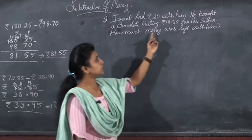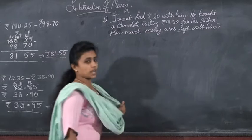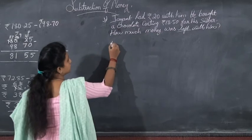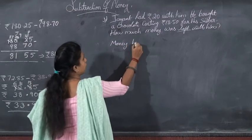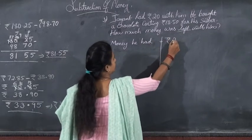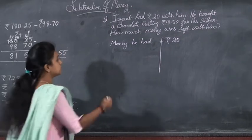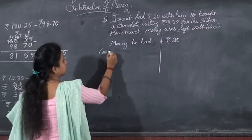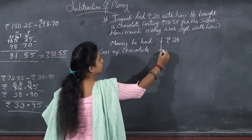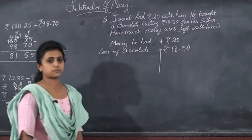Left. Now let's write the statement. Jaypal had rupees 20, so money he had, or you can write, money Jaypal had, that is rupees 20. Then he bought a chocolate costing rupees, that is the cost of chocolate, cost of chocolate is equal to rupees 18.50 paisa, 18 rupees 50 paisa.